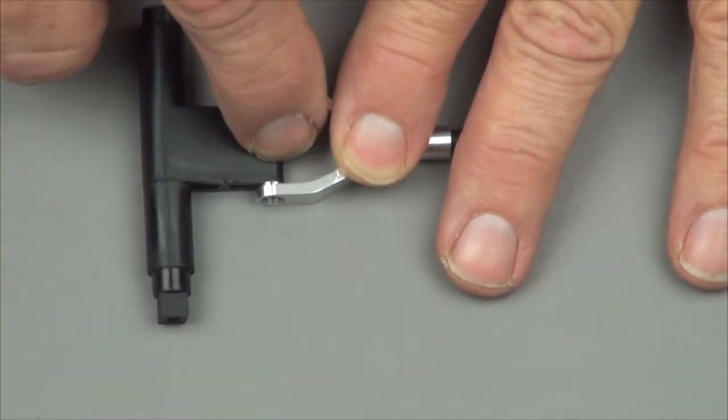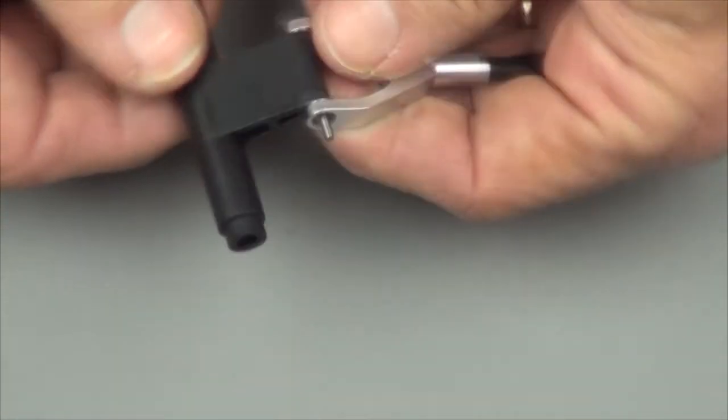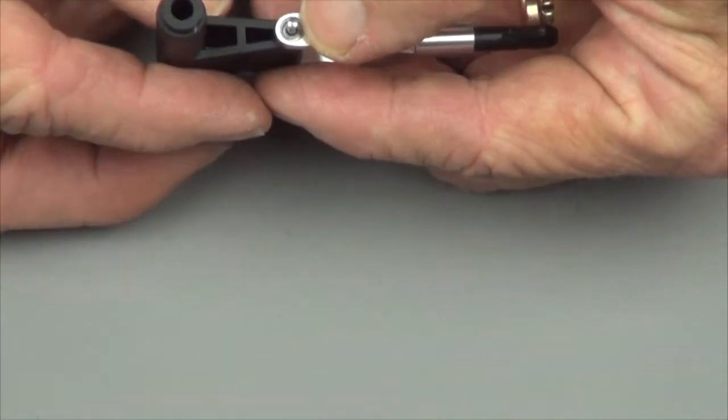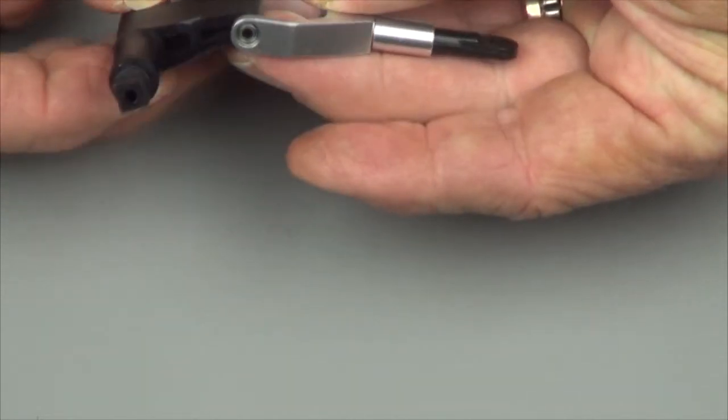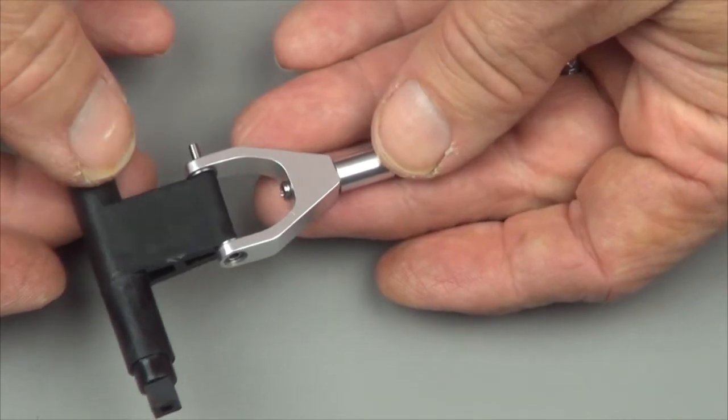I suppose I could put some CA in the center of this or put some sort of set screw in it, but I'm going to use thread lock instead on the outside. That way, it's removable at a later time in case I need to take this apart.